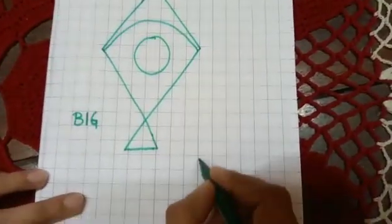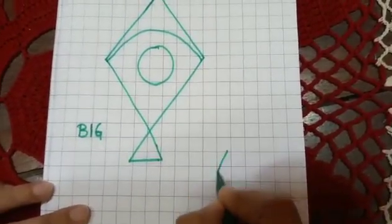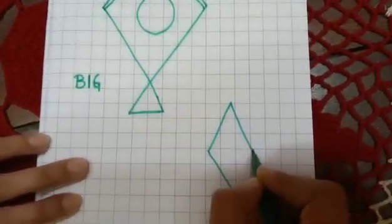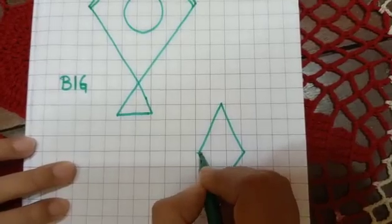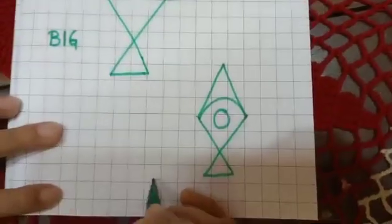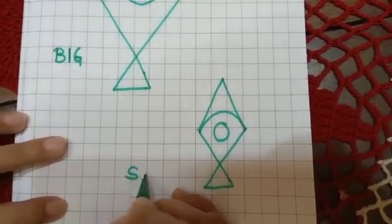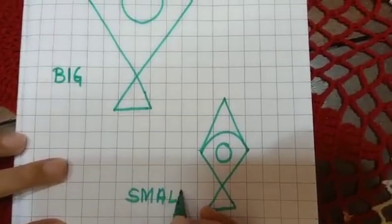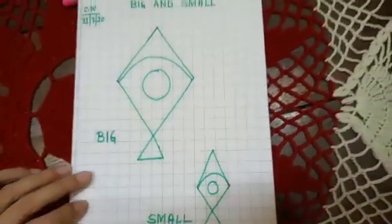Now here you will draw one small kite. And here you will write small, S-M-A-L-L. Small.